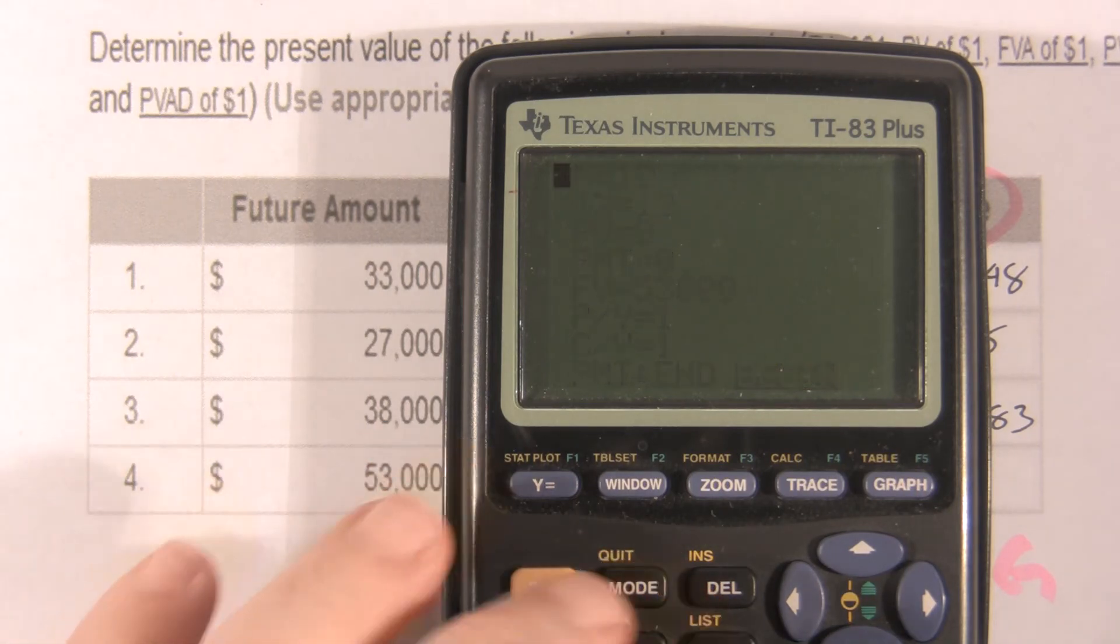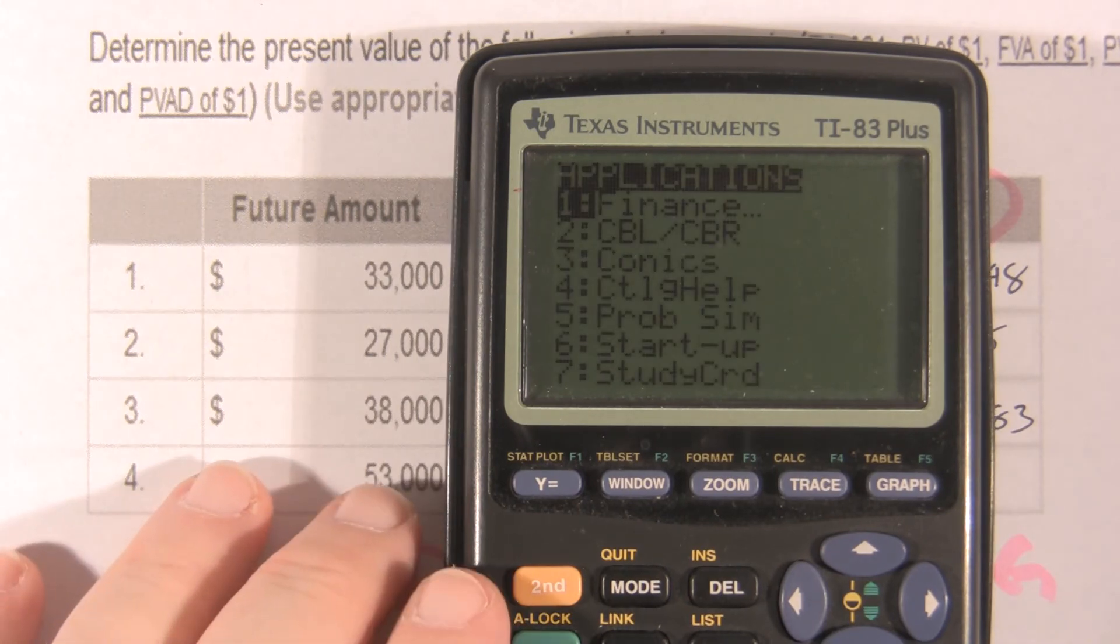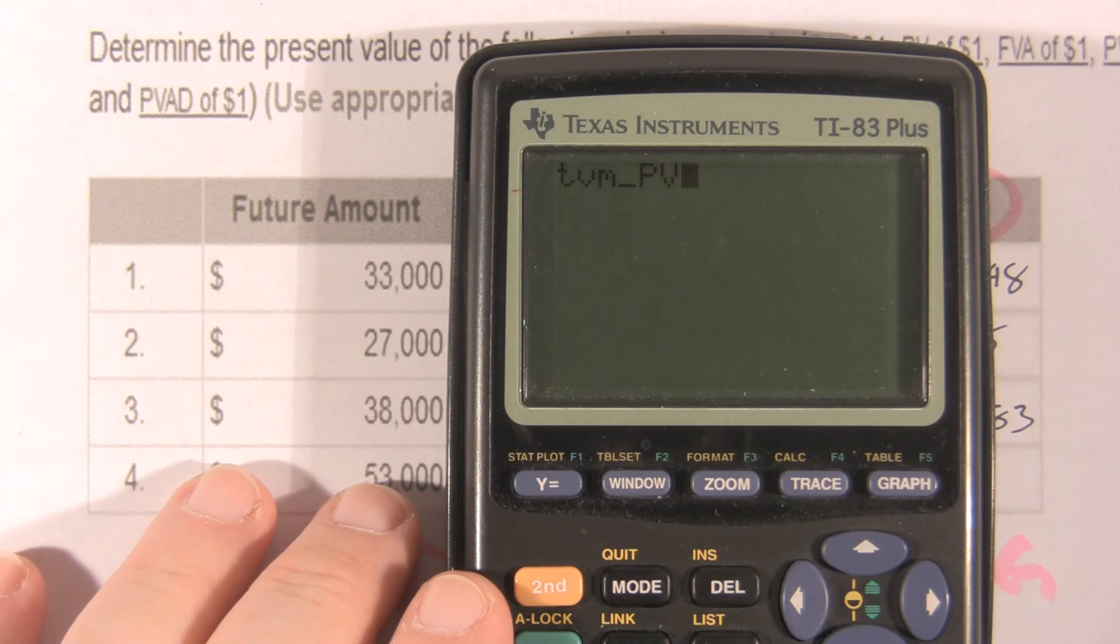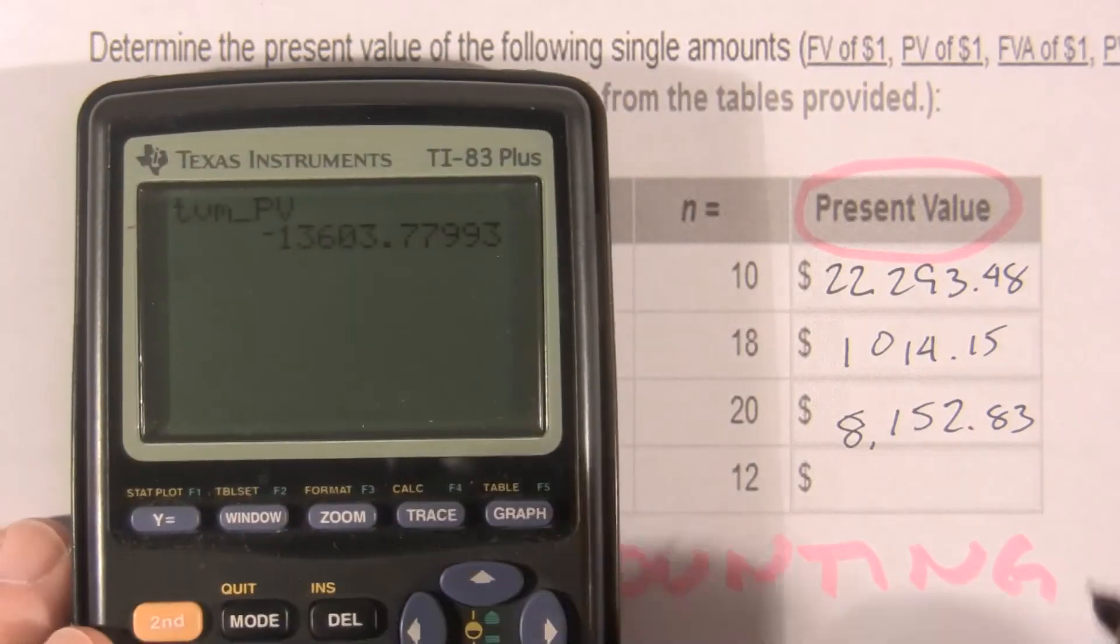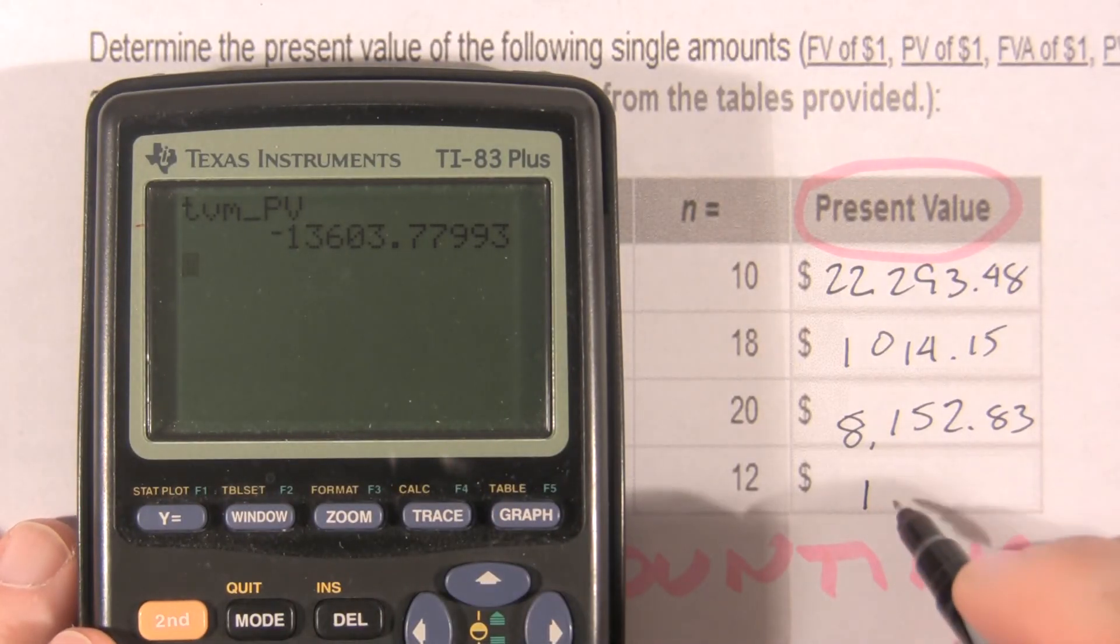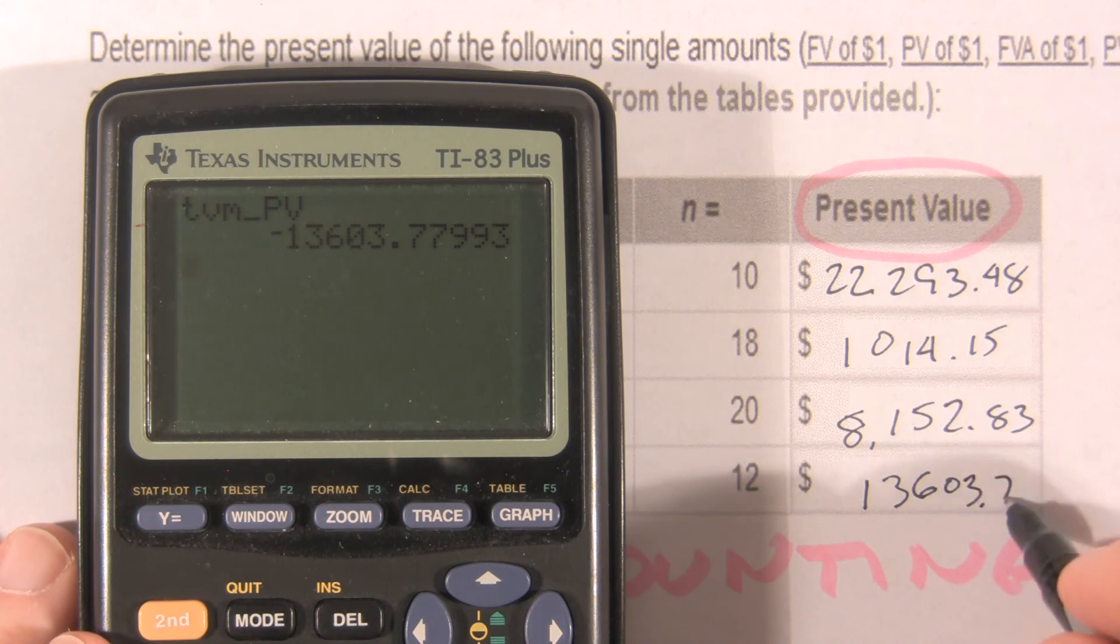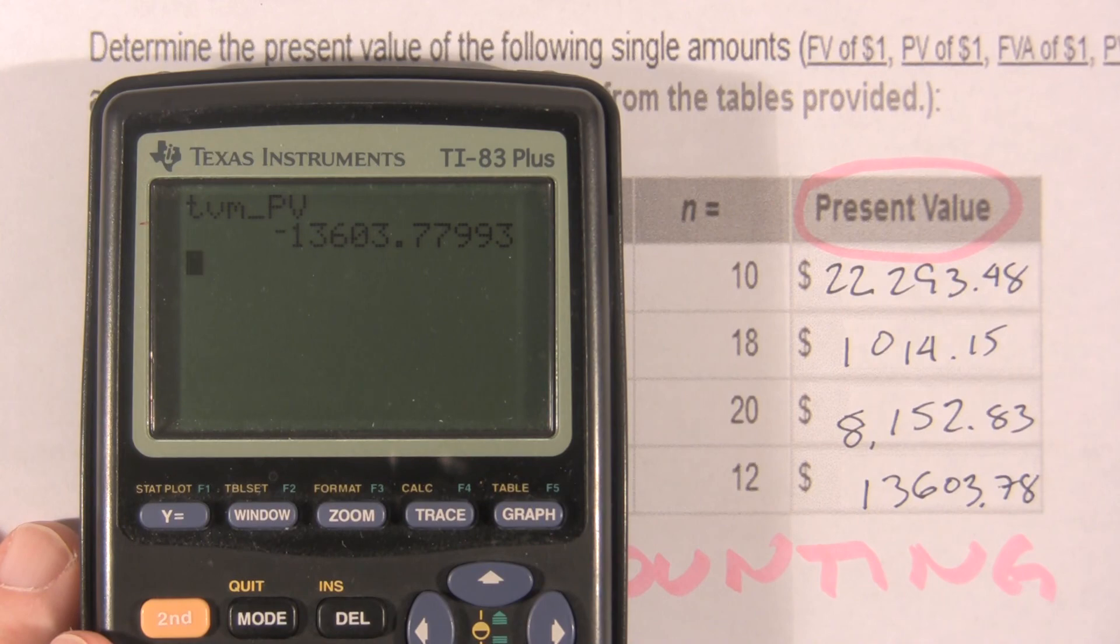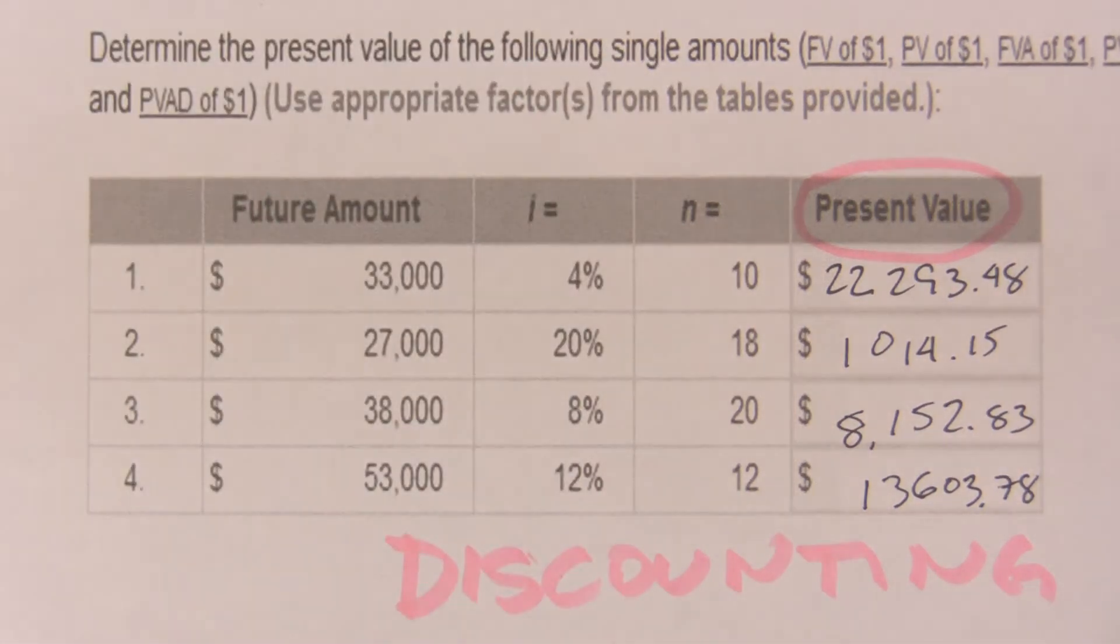Second mode, quit. Apps, finance, option 4, present value. Enter. $13,603.78. So, $13,603.78 at 12% for 12 years is exactly the same amount. That's $53,000 then.